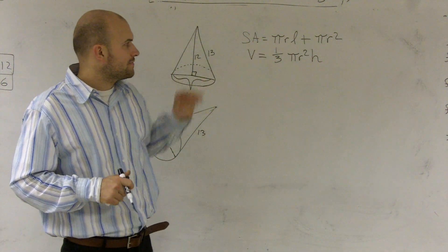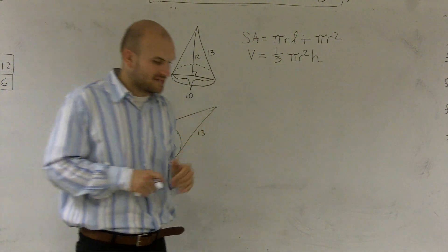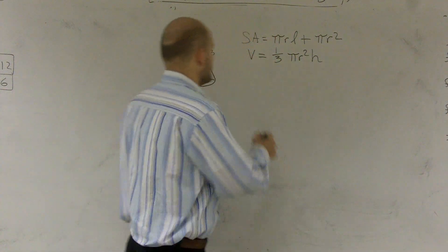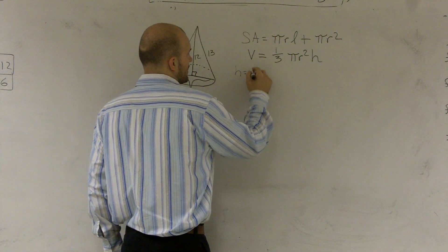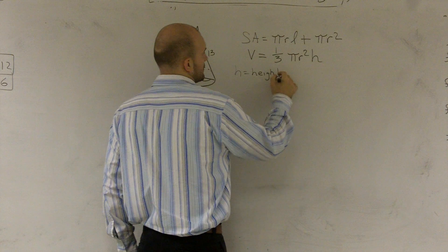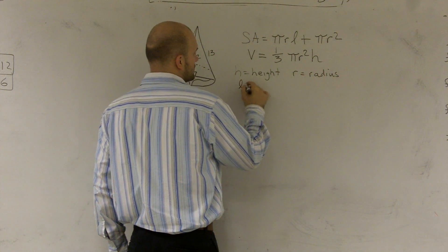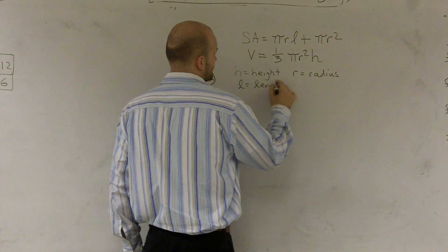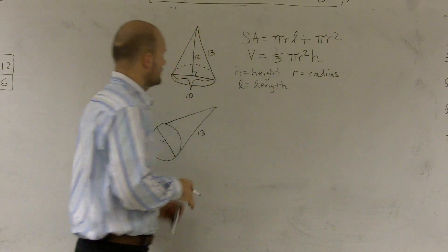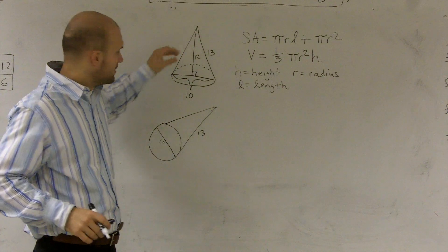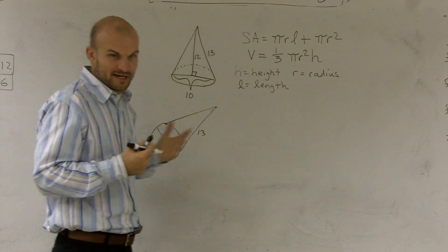The volume is 1/3 pi r squared times h, where h equals the height, r equals the radius, and l equals the length of the side of the cone from the base to the apex or the top.